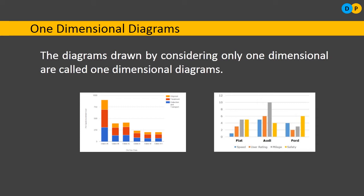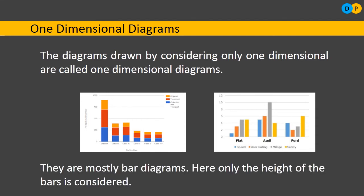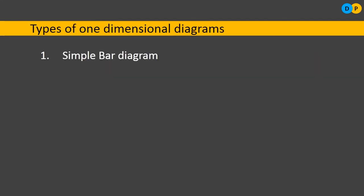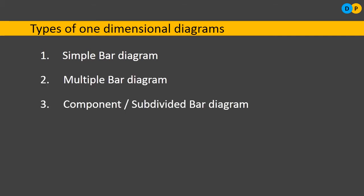As mentioned, in one-dimensional diagrams we consider only the height, not the width. Within one-dimensional diagrams, there are four different varieties: the first is simple bar diagram, followed by multiple bar diagram, then component or subdivided bar diagram, and the fourth variety is percentage bar diagram.